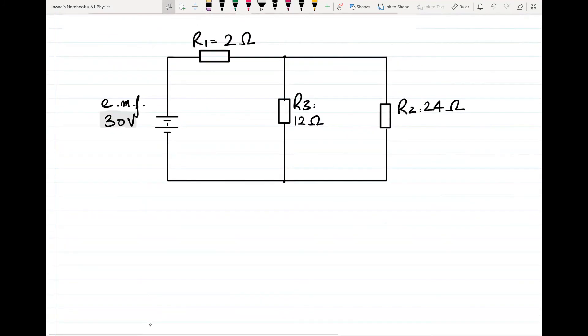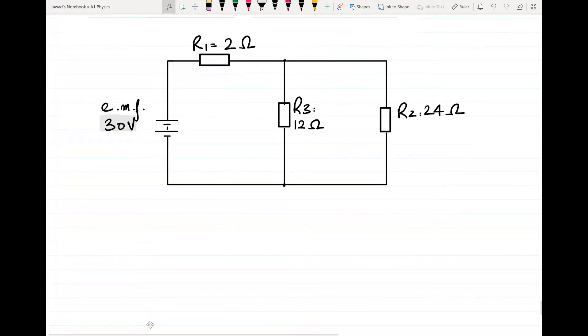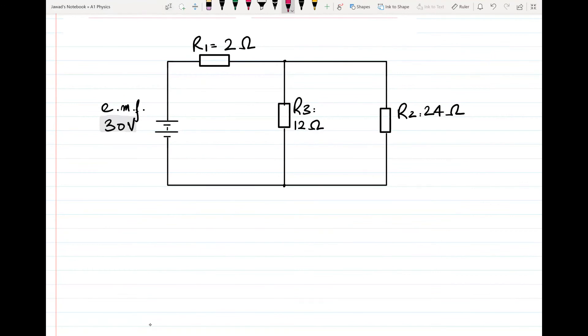Next we will move on to a simple circuit. We have this simple circuit in front of us in which there are three resistors present. One resistor R1 has a resistance of 2 ohms, R2 has resistance of 24 ohms, and R3 has resistance of 12 ohms. There is a battery which has an EMF of 30 volts. We have to solve this circuit - find voltage across each resistor and the value of current flowing through each resistor.